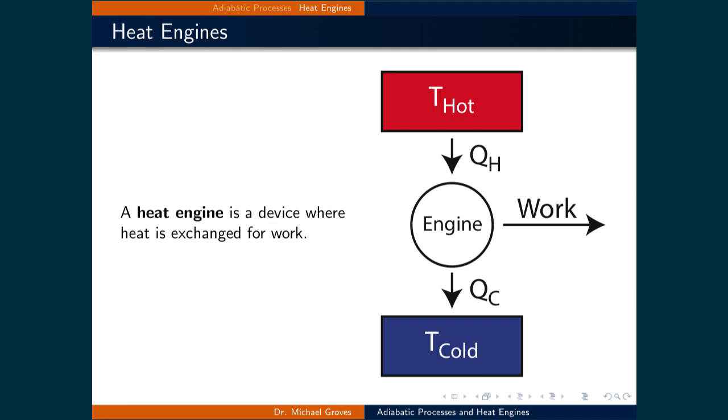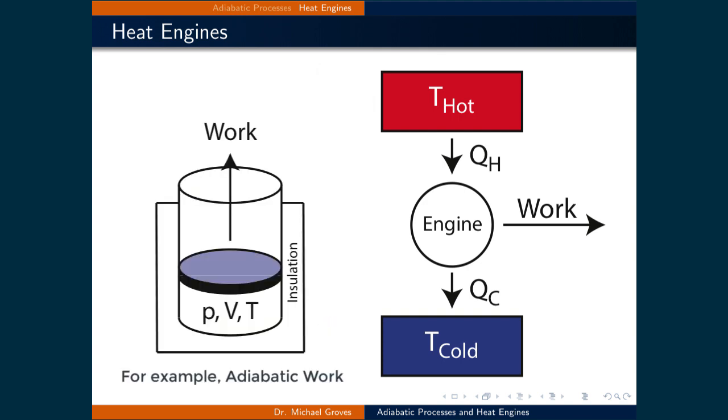The schematic for heat engines typically have a high temperature and a low temperature reservoir, which are both connected to an engine. You can continue to imagine this engine is a movable frictionless piston that allows PV work to be done by or to the gas.